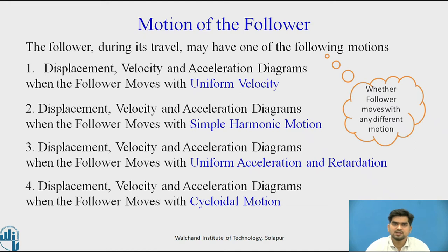We will see the first type: the follower moves with uniform velocity. For finding the motion of the followers moving with uniform velocity, you first need to understand how to draw the displacement, velocity, and acceleration diagram when the follower moves with uniform velocity.